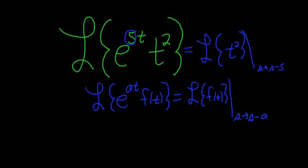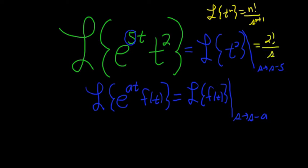Now you have to use some background knowledge. The Laplace of t squared — or rather, the Laplace of t to the n — is n factorial over s to the n plus 1. So here it's 2 factorial over s cubed. And then we still have our shift, s to s minus 5.